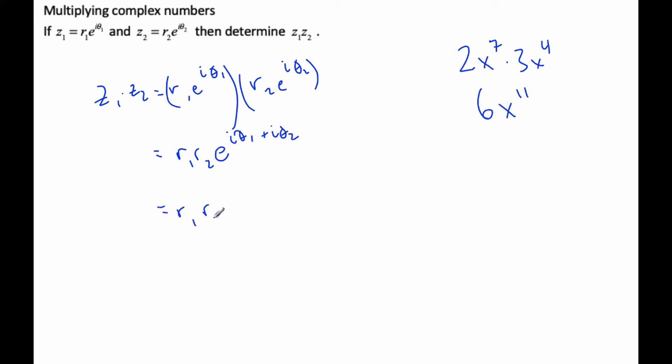So it's r1 r2 e, I can pull out the i, and the angle is just theta1 plus theta2. So when we multiply complex numbers, we in essence add, similar to exponents, we add the angles.